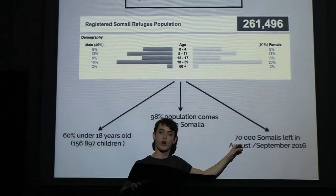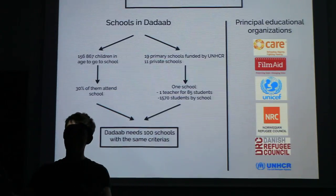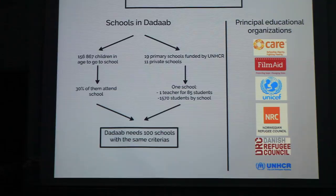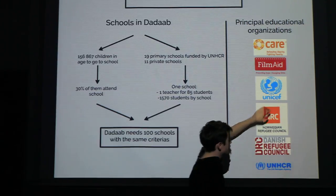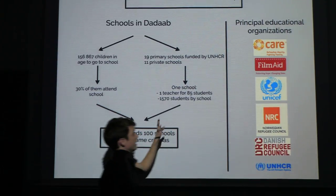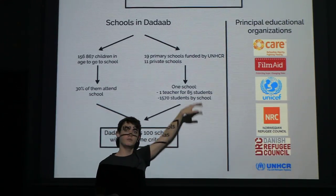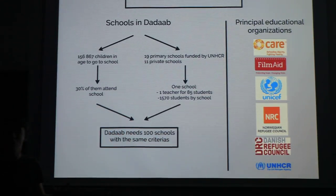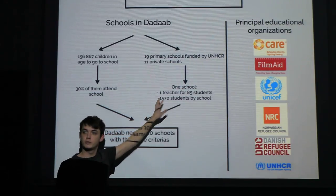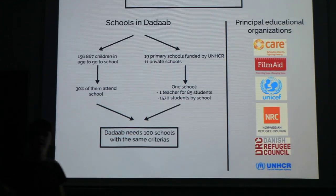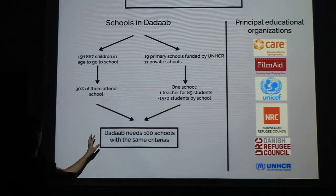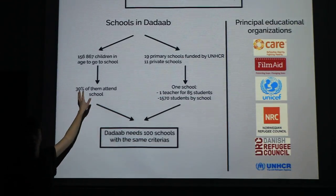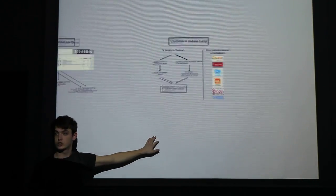A recent development is that the government is pushing people to return to Somalia. Regarding education, several main organizations — from Kenya, Norway, Denmark, and international bodies — take care of the 30 schools found there. On average, each school has 1,500 children, with one teacher per 85 students. Taking these numbers into account, only 30% of the children in Dadaab attend school. To have everyone in school, you would need to build 100 schools — so this is a huge need.